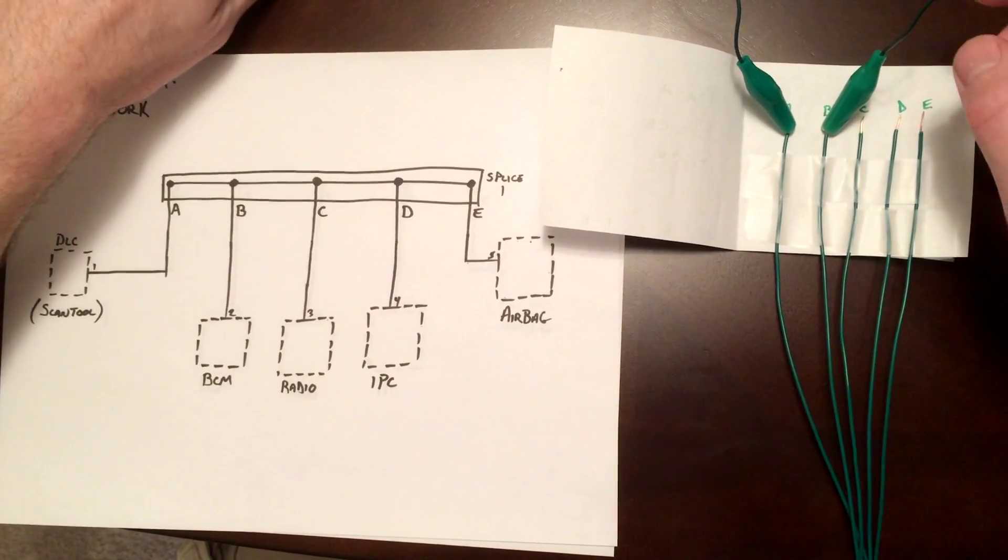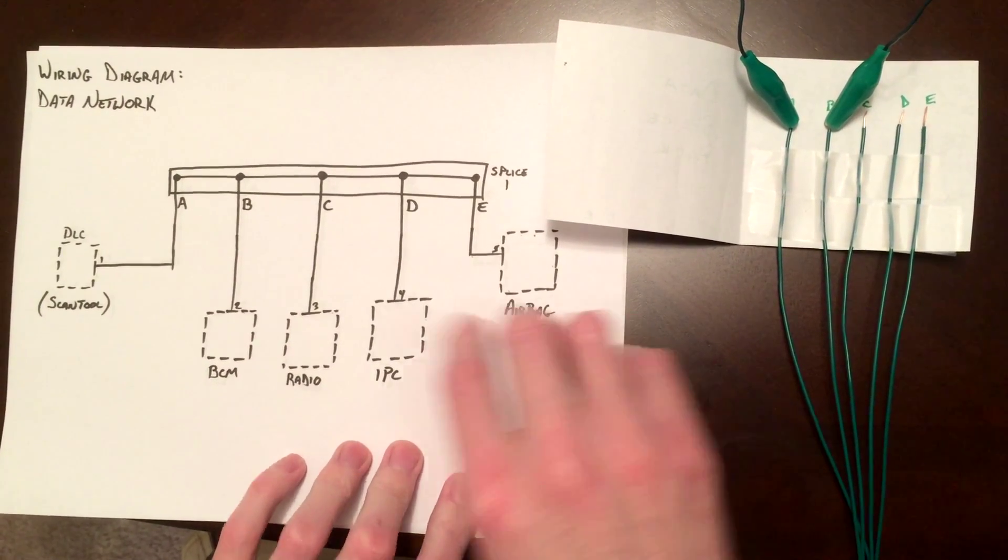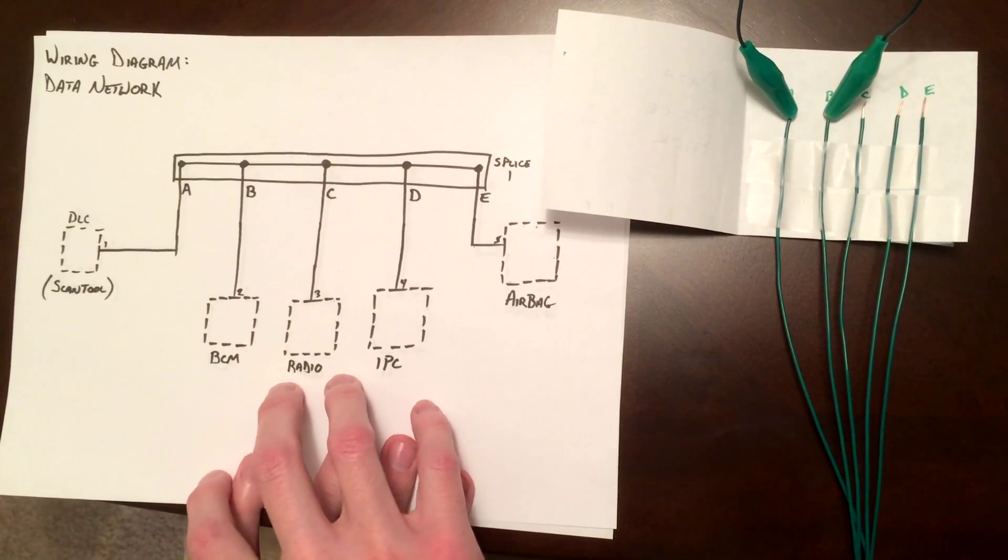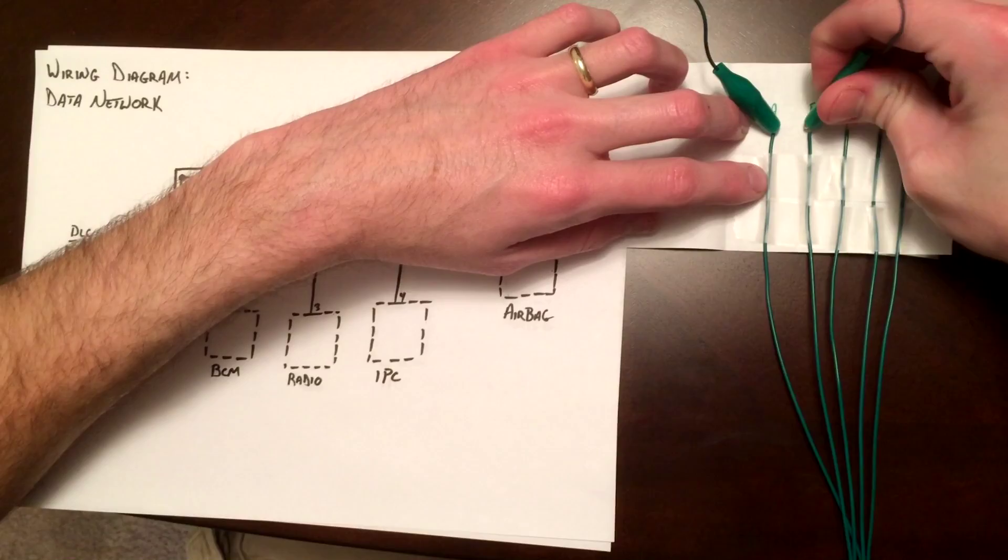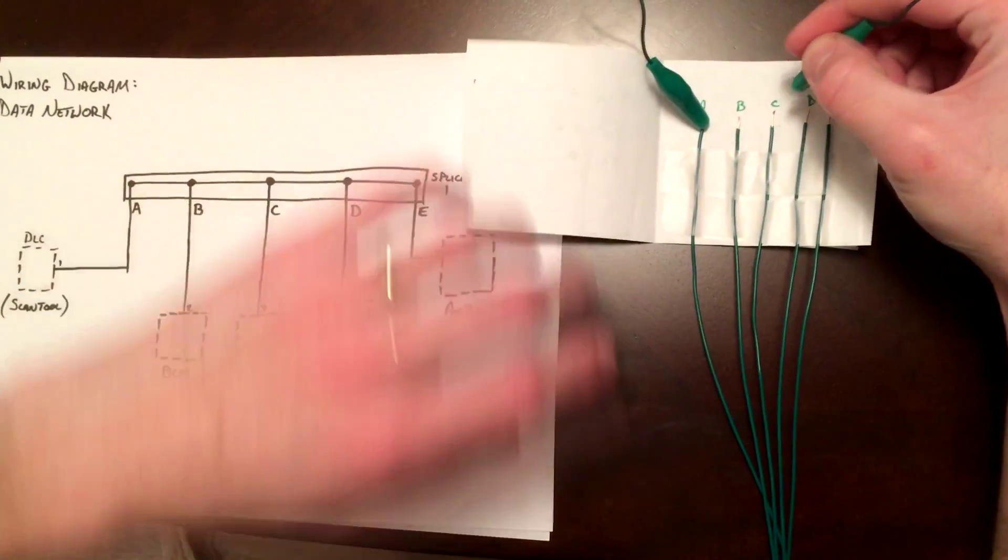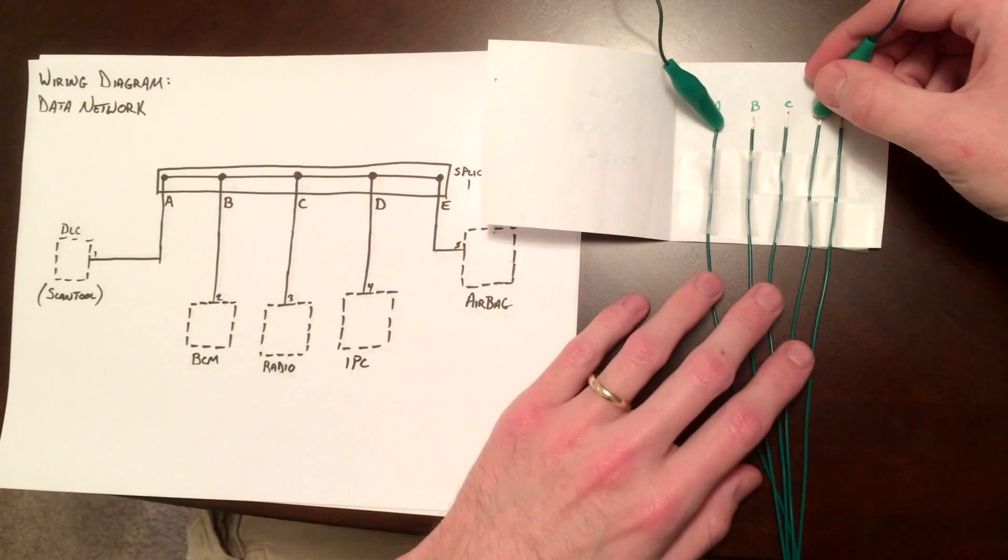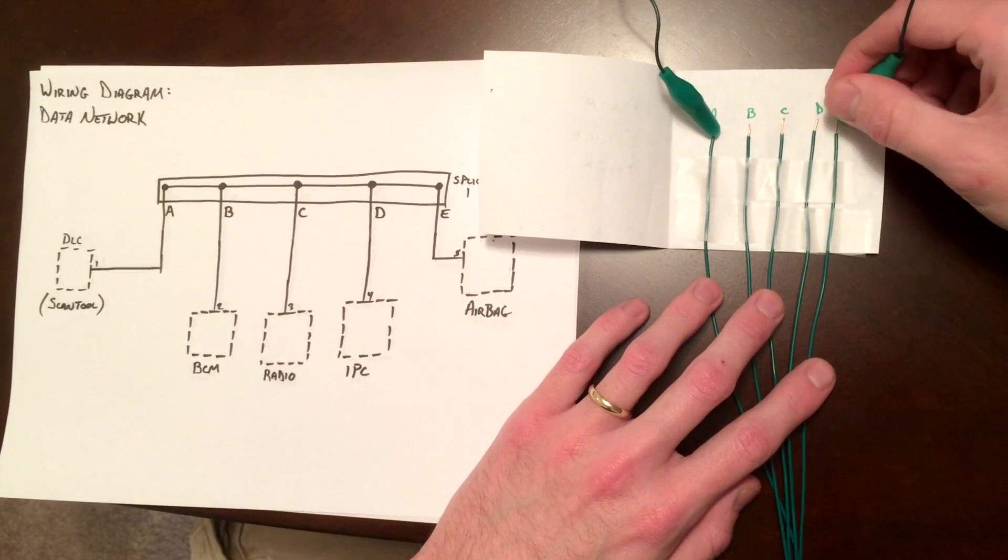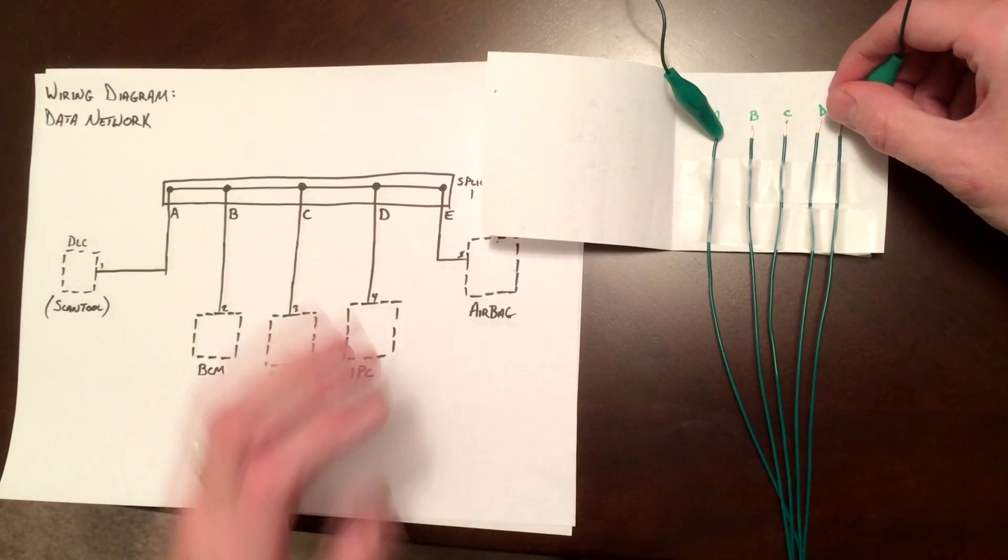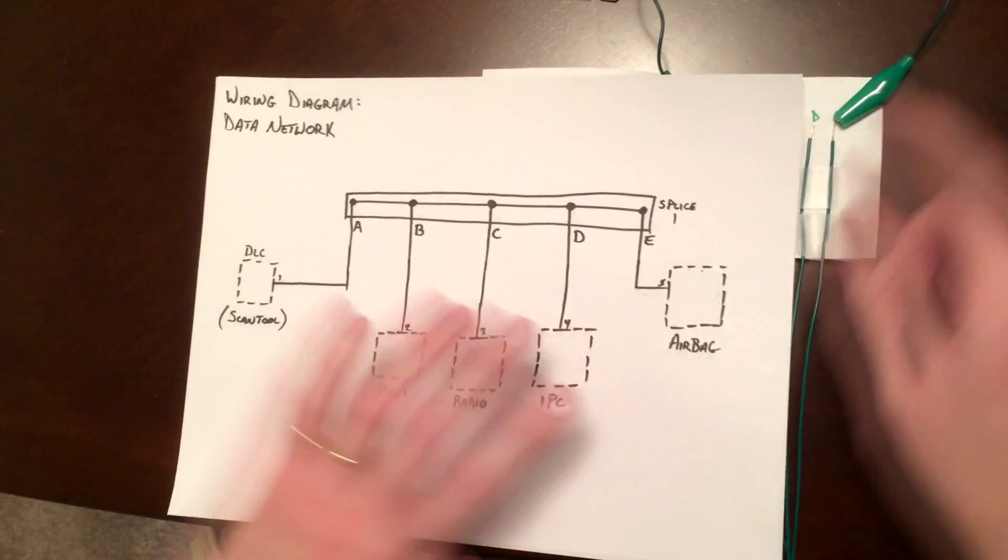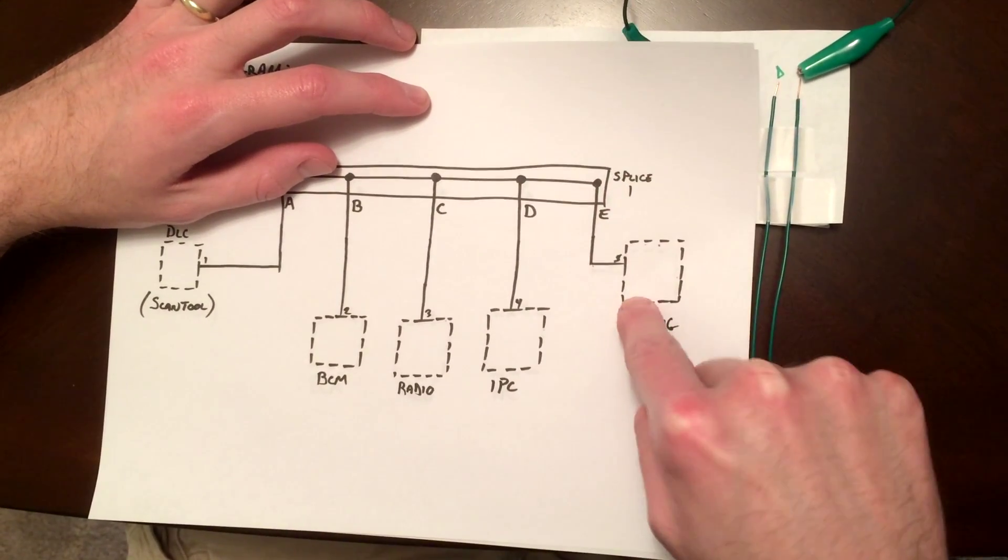So, what you'll find, say in our example, the airbag module was bad, and it was pulling the entire network down. What you'll find then, if we go from pin A, B, C, D, you'll have communication on every single one. But when you go to pin E, you'll find that you can't communicate with the airbag module. So now you know that your issue is somewhere from this point to the airbag module.